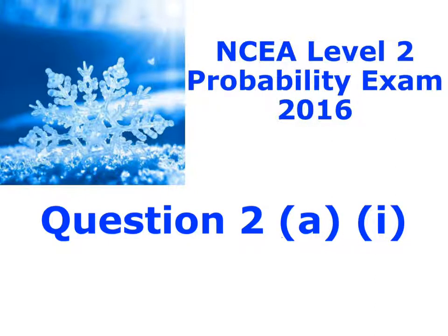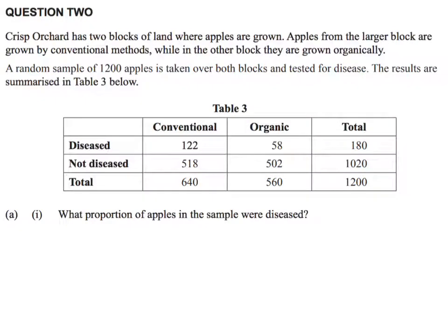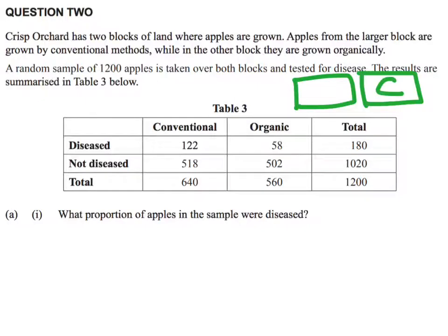Here is question 2a part 1. What we've got here is the orchard — more about the apples. It talks about two blocks of land: on one block the apples are grown using conventional methods, and in the other block they're grown using organic methods. There are trees in both blocks, and we've got two different types of methods. They've taken a sample of 1200 apples and tested those for disease.